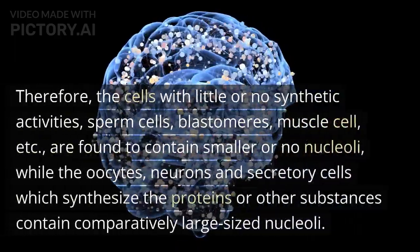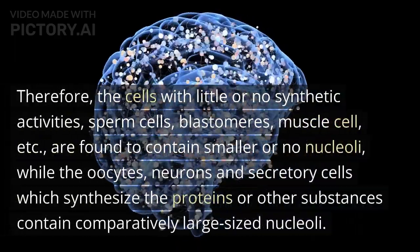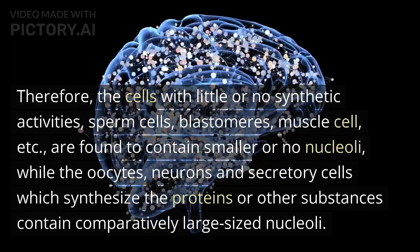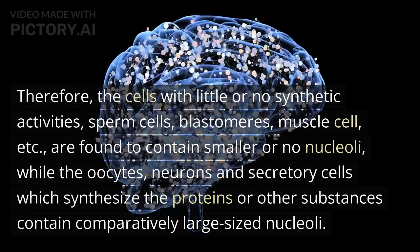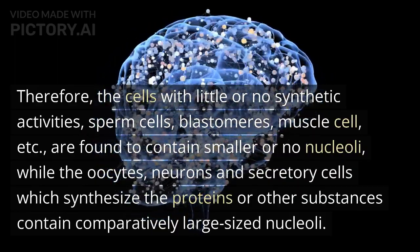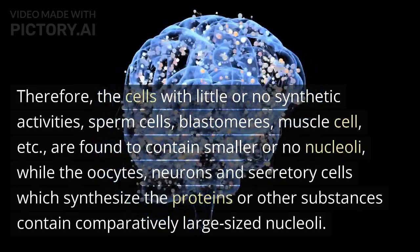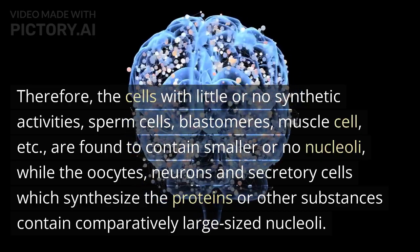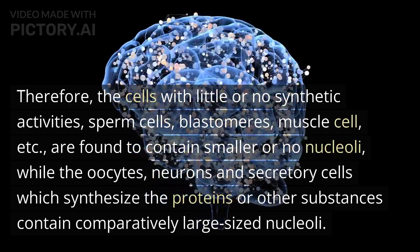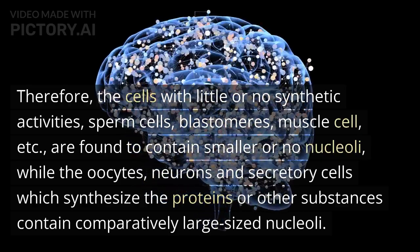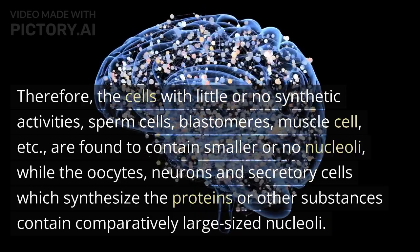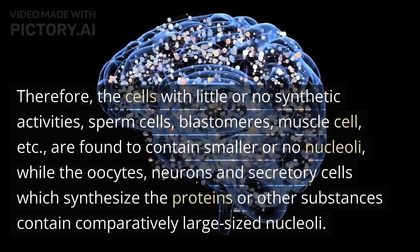Therefore, cells with little or no synthetic activities, such as sperm cells, blastomeres, and muscle cells, are found to contain smaller or no nucleoli, while oocytes, neurons, and secretory cells which synthesize proteins or other substances contain comparatively large-sized nucleoli.